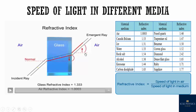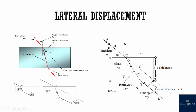Now let's see what lateral displacement is. Lateral displacement is the perpendicular distance — marked as D — between the path of the emergent ray and the direction of the incident ray. The lateral displacement depends upon three quantities: one, the thickness of the glass block; two, the angle of incidence; and three, the refractive index of glass.